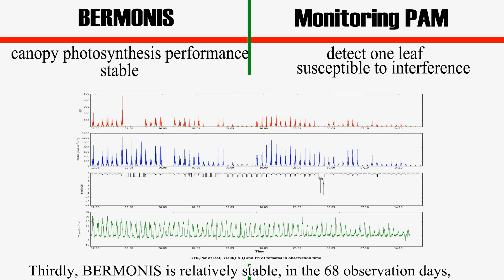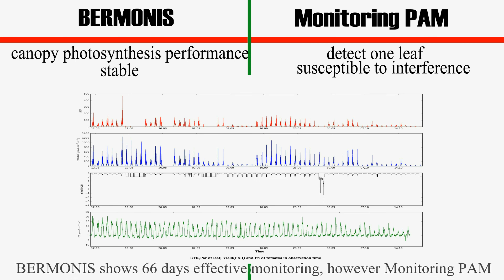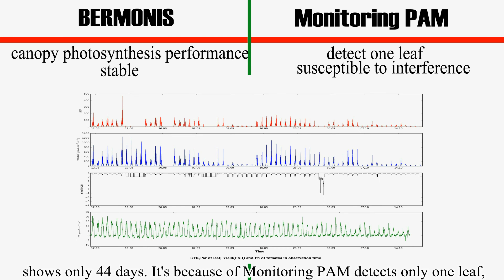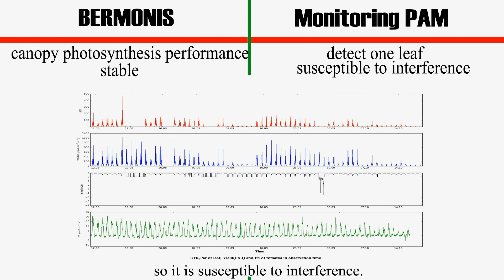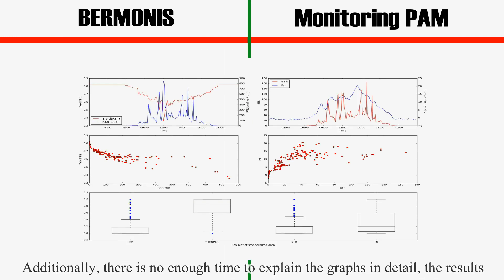Thirdly, BERMONIS is relatively stable. In the 68 observation days, BERMONIS shows 66 days effective monitoring. However, Monitoring PAM shows only 44 days. It's because Monitoring PAM detects only one leaf, so it's susceptible to interference.